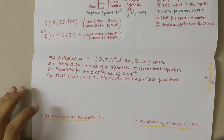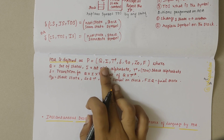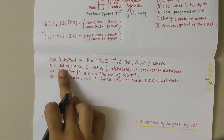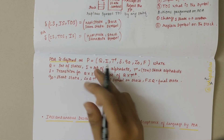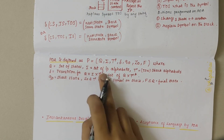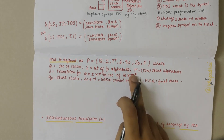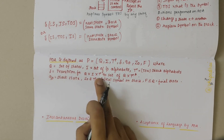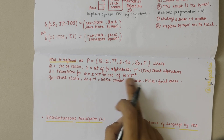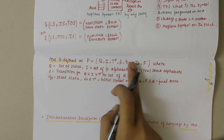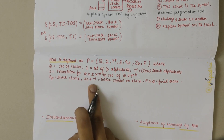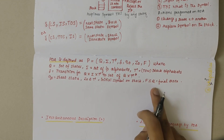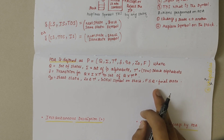PDA is formally defined as P = (Q, Σ, Γ, δ, q0, Z0, F), where Q is the set of states, Σ is the set of input alphabets, Γ (tau) contains the stack alphabets, δ is the transition function from Q × Σ × Γ, q0 is the start state, Z0 is a subset of Γ which has the initial symbol on the stack, and F is a subset of Q comprising the final states.